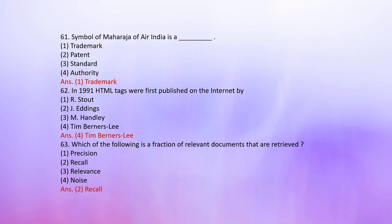Number 63: Which of the following is a fraction of relevant documents that are retrieved? 1. Precision, 2. Recall, 3. Relevance, 4. Noise. The correct answer is 2: Recall.